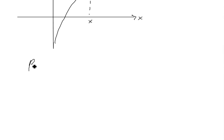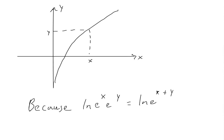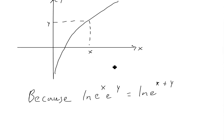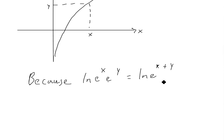Because ln of e to the x times e to the y equals ln e to the x plus y, and the y values are the exact same, they both share the exact same x's. This is only true if e to the x times e to the y equals e to the x plus y. And there is our proof for the first one.